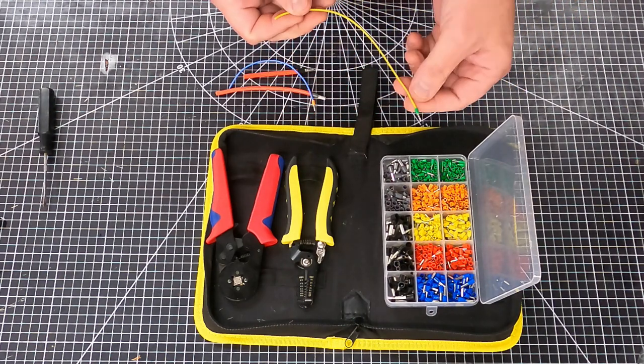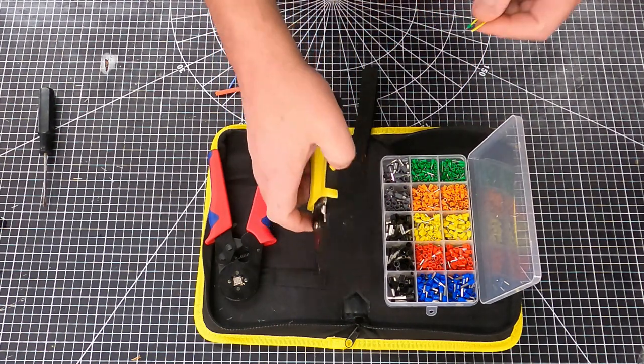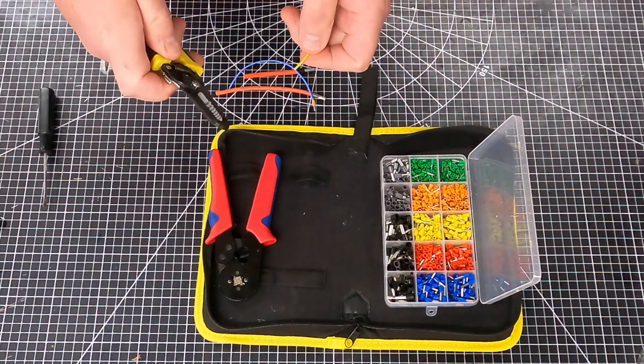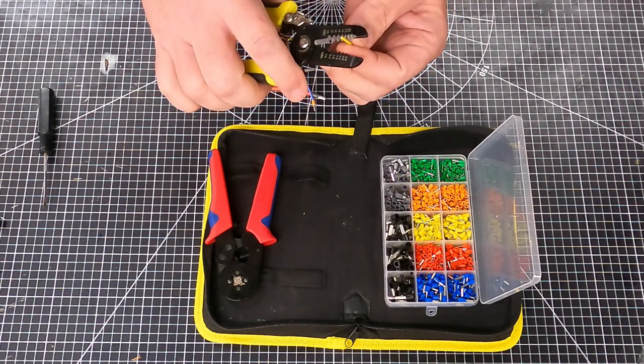I've got some wires here with them already installed. We're going to go through the process of putting one on the other end. This particular wire is 22 gauge, the smaller end of what the kit covers.